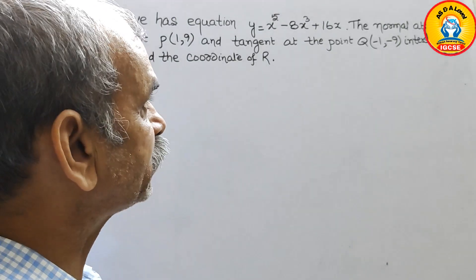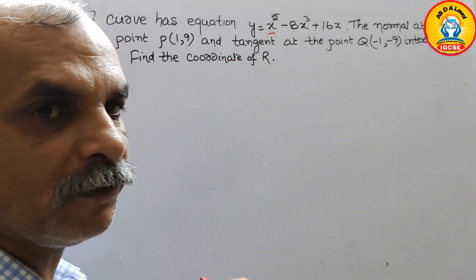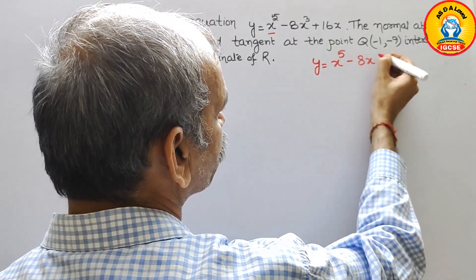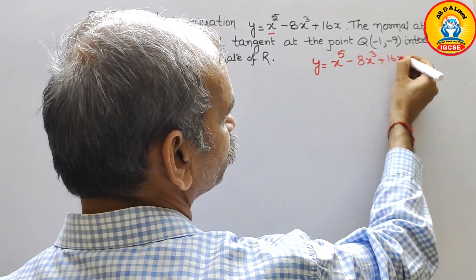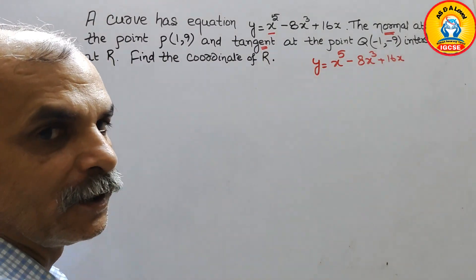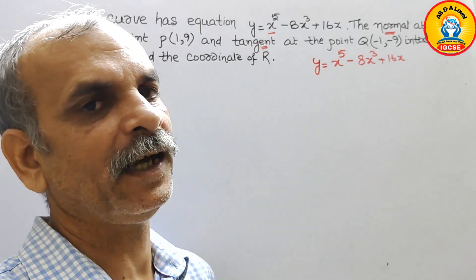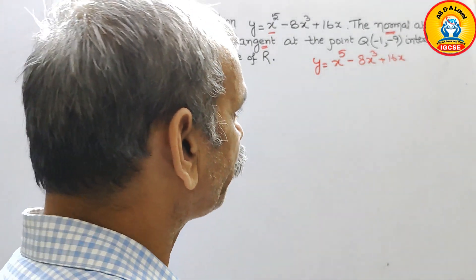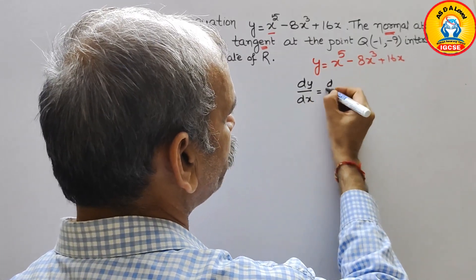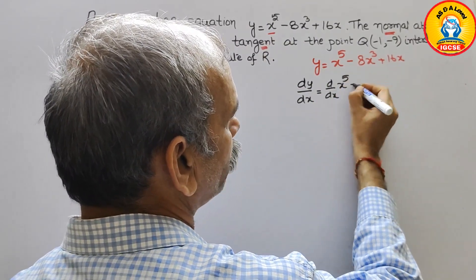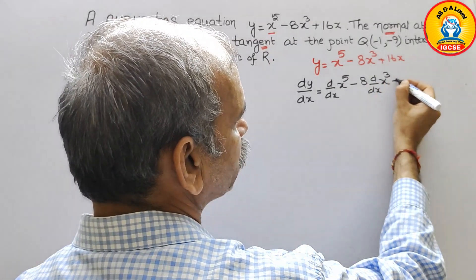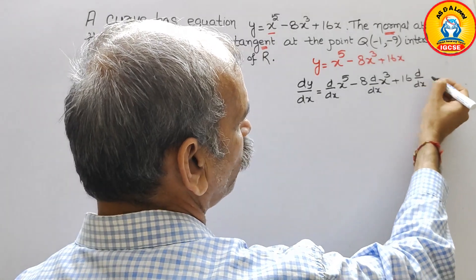So how will we do this? First, they have given us the curve: y = x⁵ - 8x³ + 16x. Since they mention both the normal and the tangent, we first have to differentiate and find the gradient. So differentiating: dy/dx = d/dx of x⁵ minus 8·d/dx of x³ plus 16·d/dx of x.